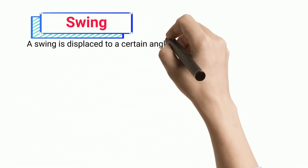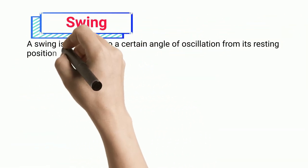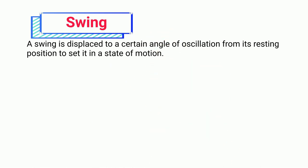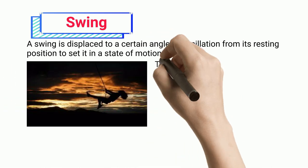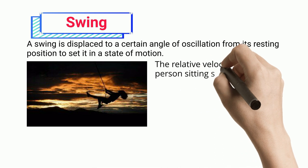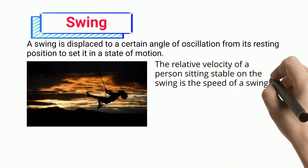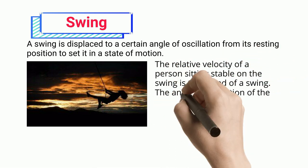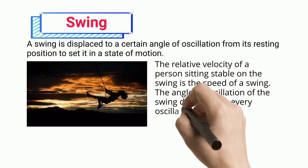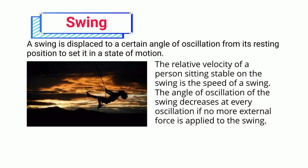Swing. A swing is displaced to a certain angle of oscillation from its resting position to set it in a state of motion. The relative velocity of a person sitting stable on the swing is the speed of a swing. The angle of oscillation of the swing decreases at every oscillation if no more external force is applied to the swing.